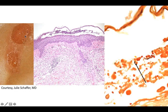Biopsy of one of these tense blisters shows an intact space, a sub-corneal split with some acantholysis shown at the base of the split with neutrophils within the cavity. Gram staining of this tissue shows gram-positive cocci within clusters.